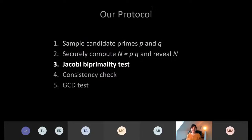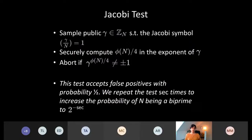The next step is Jacobi testing. First, we sample a value gamma that must have Jacobi symbol with N equal to 1. We compute phi(N)/4 in the exponent of gamma and check if this value equals plus or minus 1 — if not, we abort. This Jacobi biprimality test has a probability of one-half of accepting false positives, so to increase the probability that N is a biprime, we repeat the test security-parameter times.